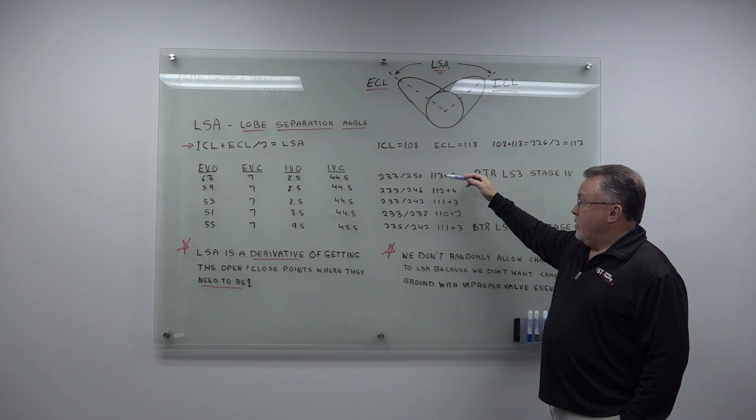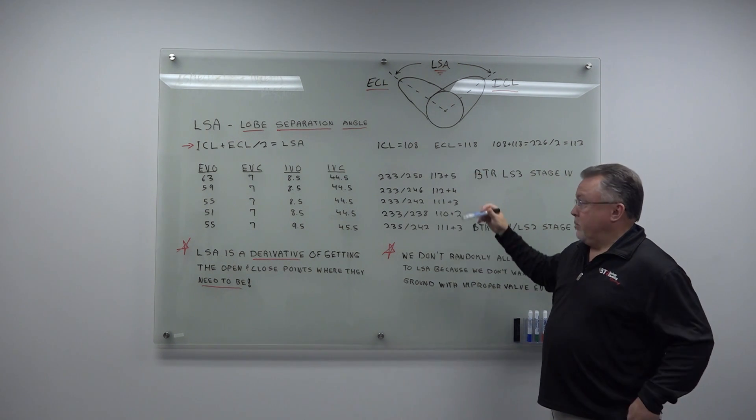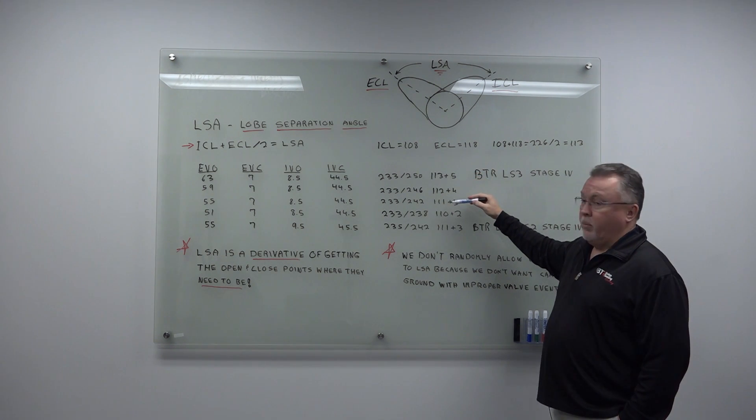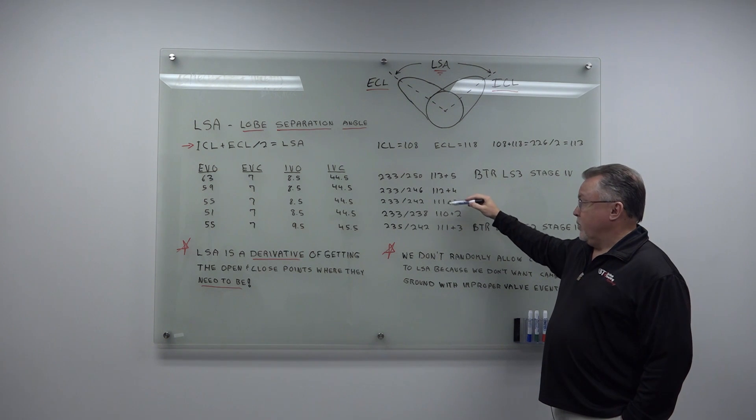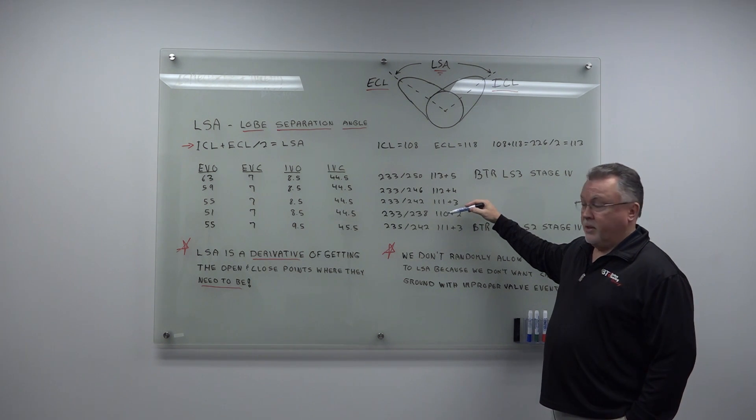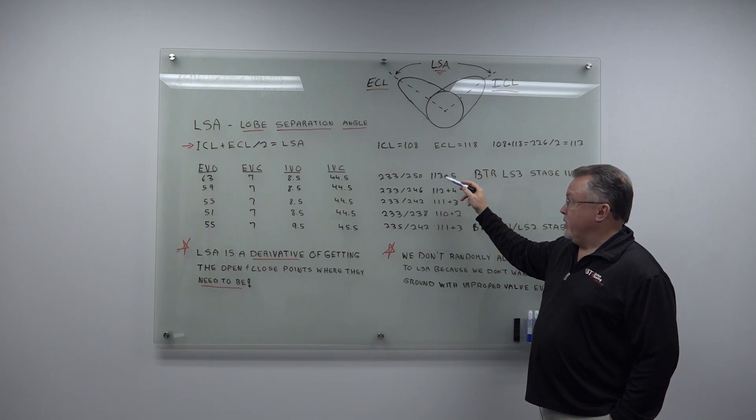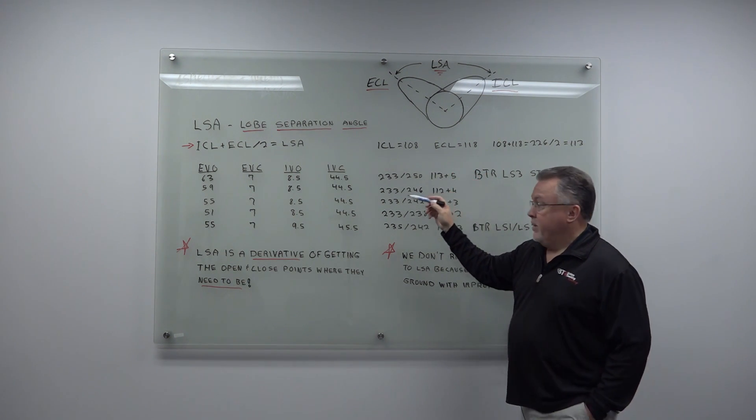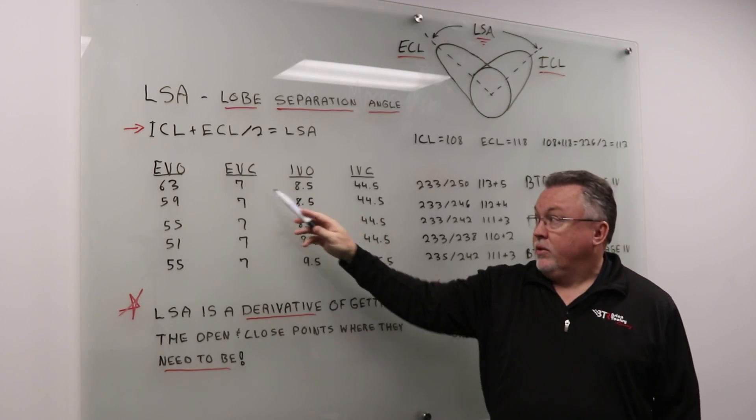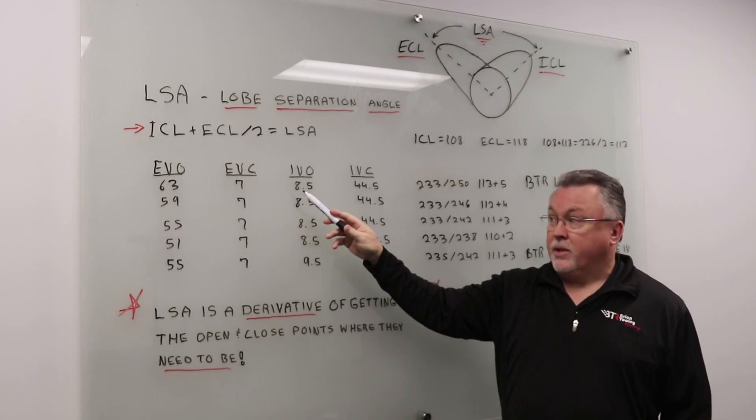Now guys say 113 is an EFI Lobe Separation Angle, but if you want to run carbureted, you got to be down here at this 110, 111 Lobe Separation Angle. Well, you can't take this cam and just grind it on a 110, 111 Lobe Separation because first off, your valves are going to hit your pistons, which is not good.